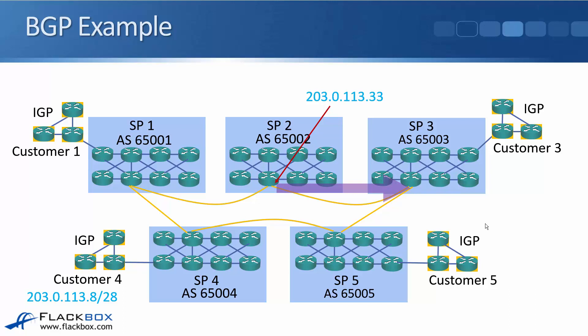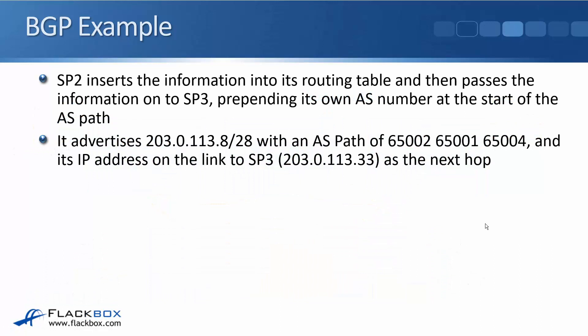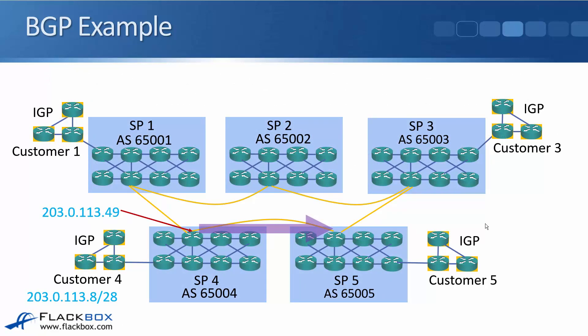SP1 and SP2 now know how to get to customer 4. SP2 passes the information on to SP3 via BGP. The IP address connecting SP2 to SP3 is 203.0.113.33. SP2 prepends its own AS onto the existing path, so SP3 learns an AS path of 65002 65001 65004, with next hop 203.0.113.33.